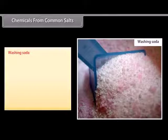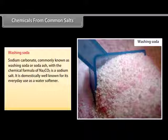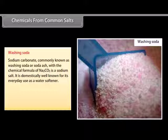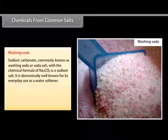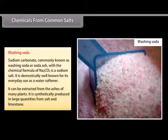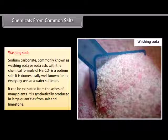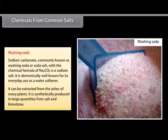Washing soda, or sodium carbonate (also known as soda ash), has the chemical formula Na2CO3 and is a sodium salt. It is domestically well known as a water softener, can be extracted from the ashes of many plants, and is synthetically produced in large quantities from salt and limestone.